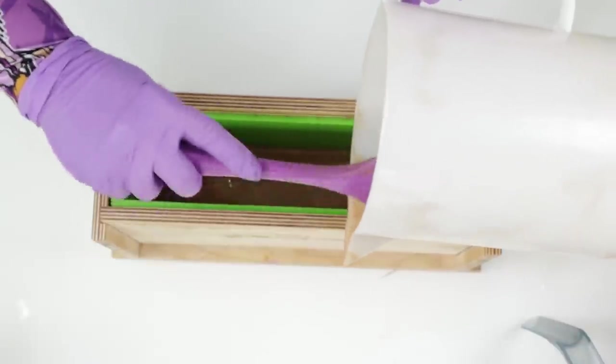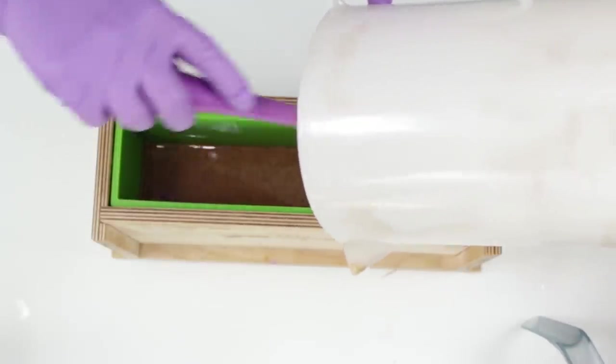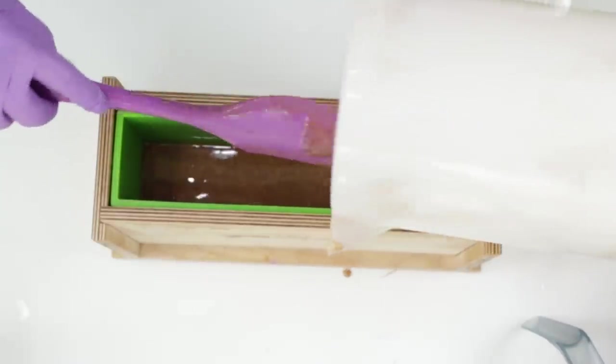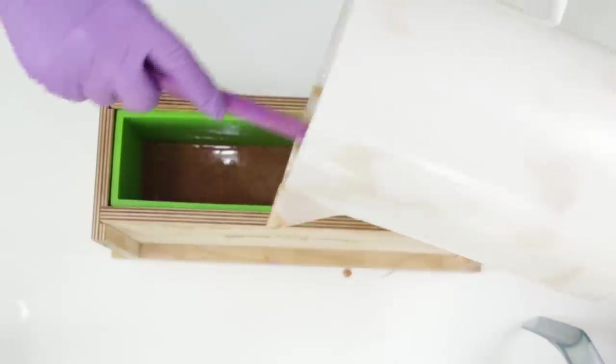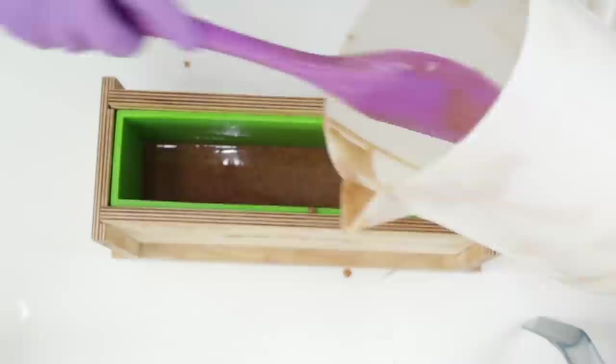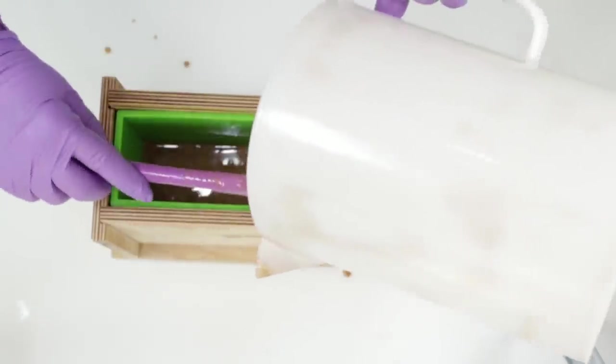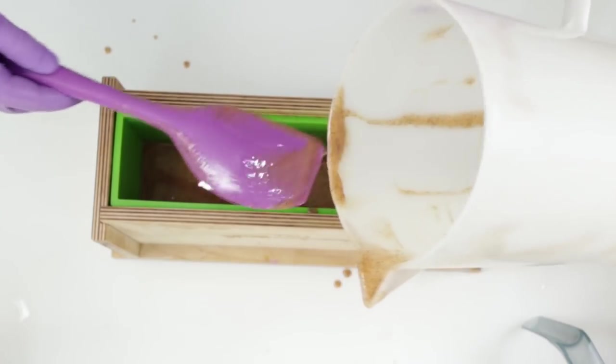I do always pour over a spatula or something even if I'm not trying to break a layer just because then that allows the batter to go into the mold a little bit more smoothly and introduces less air than if you just pour it all in on top of itself.